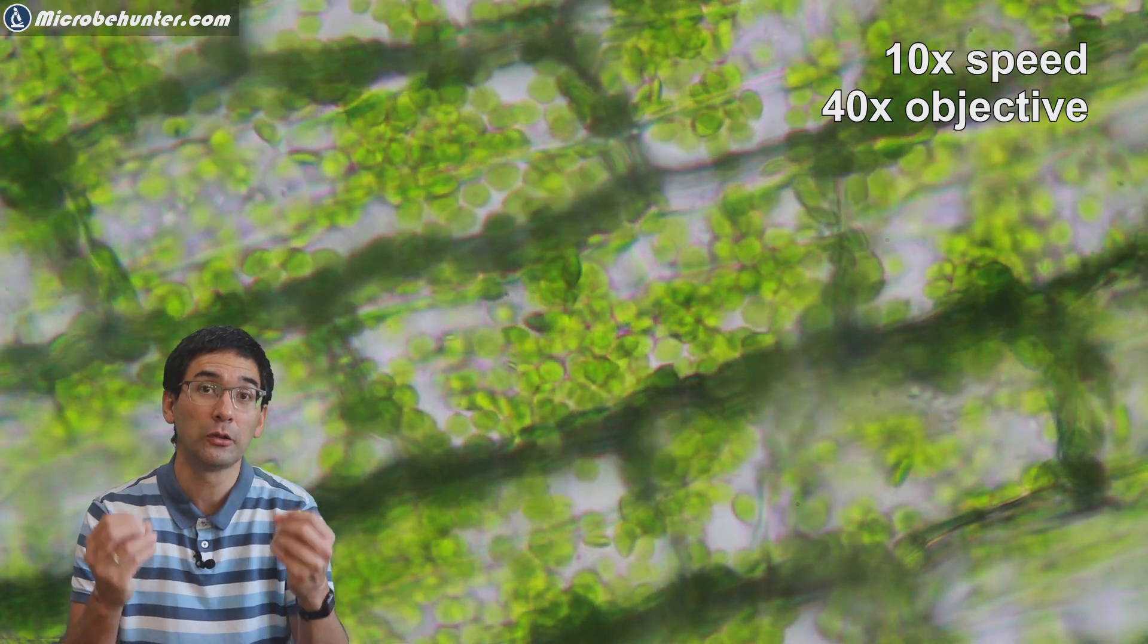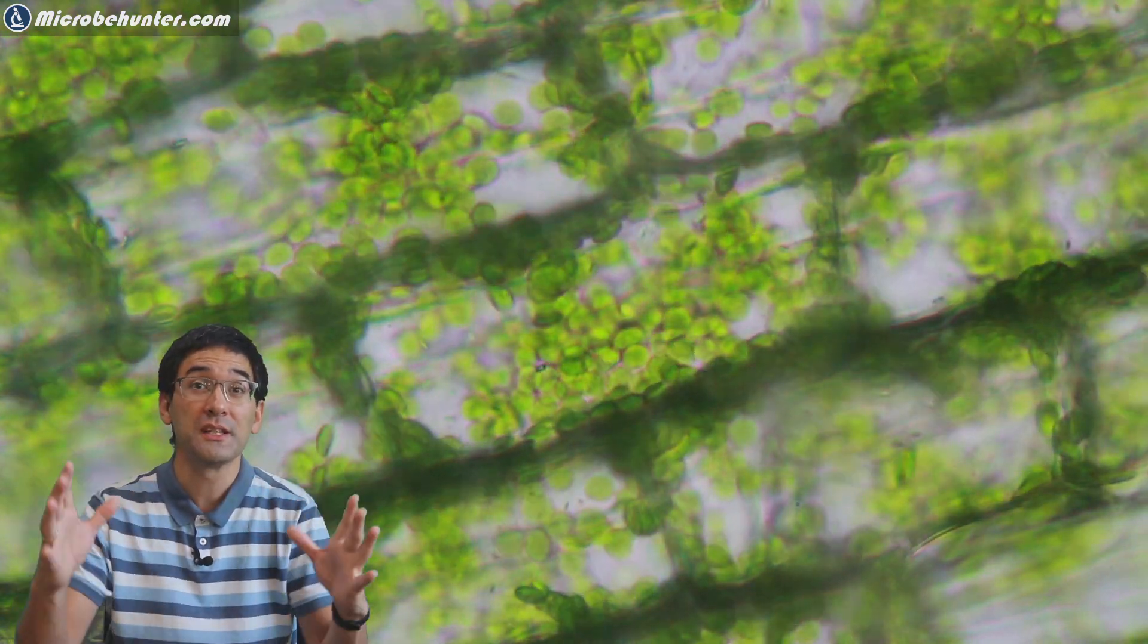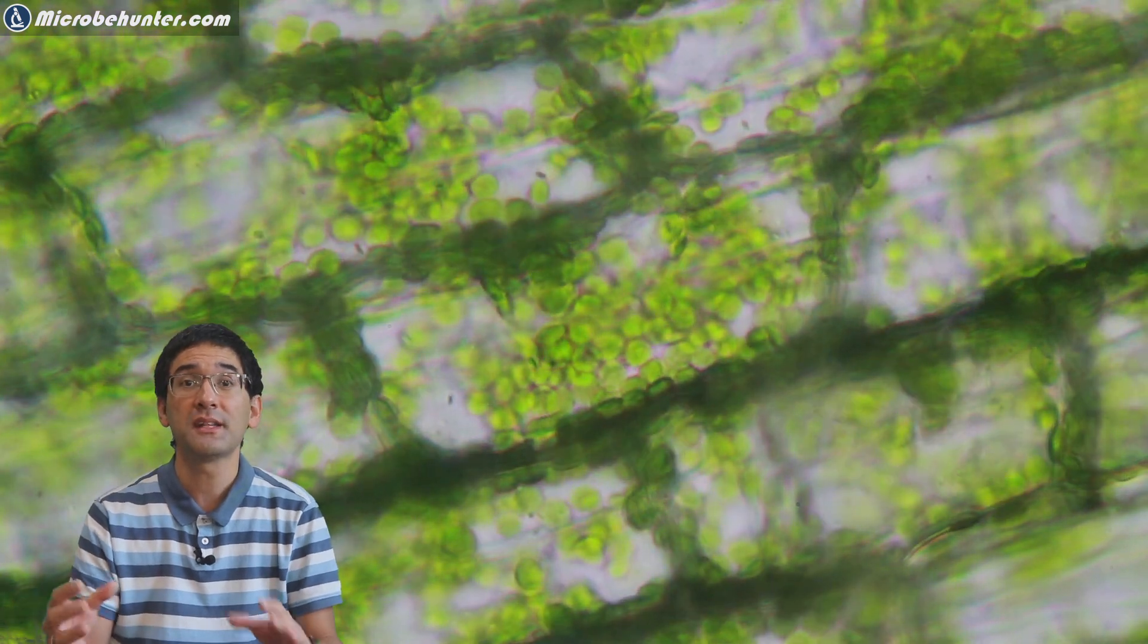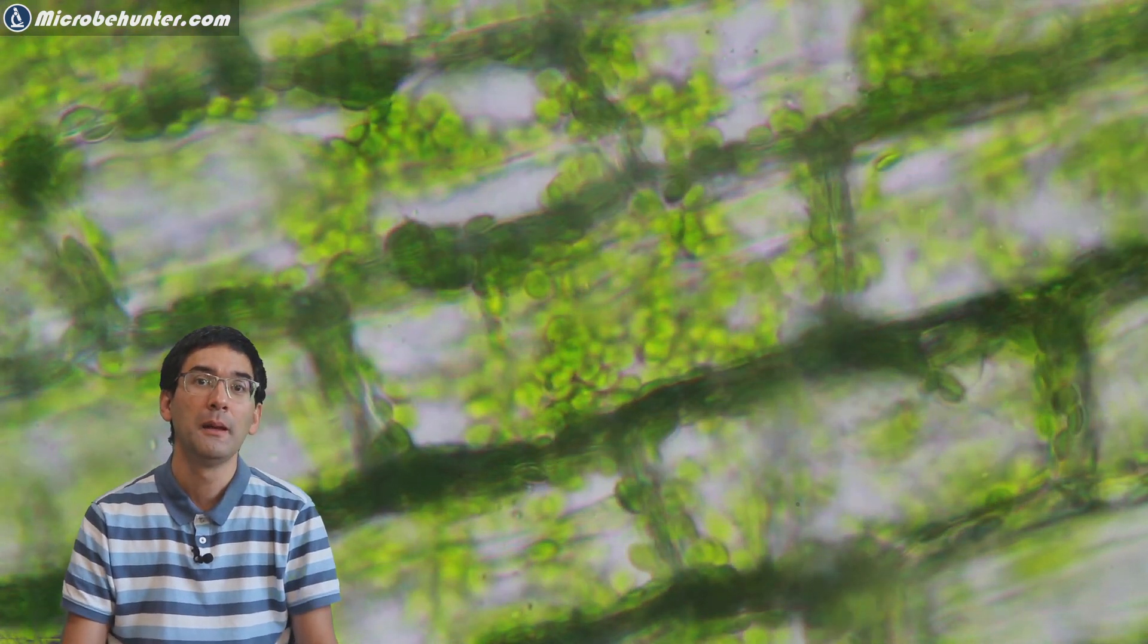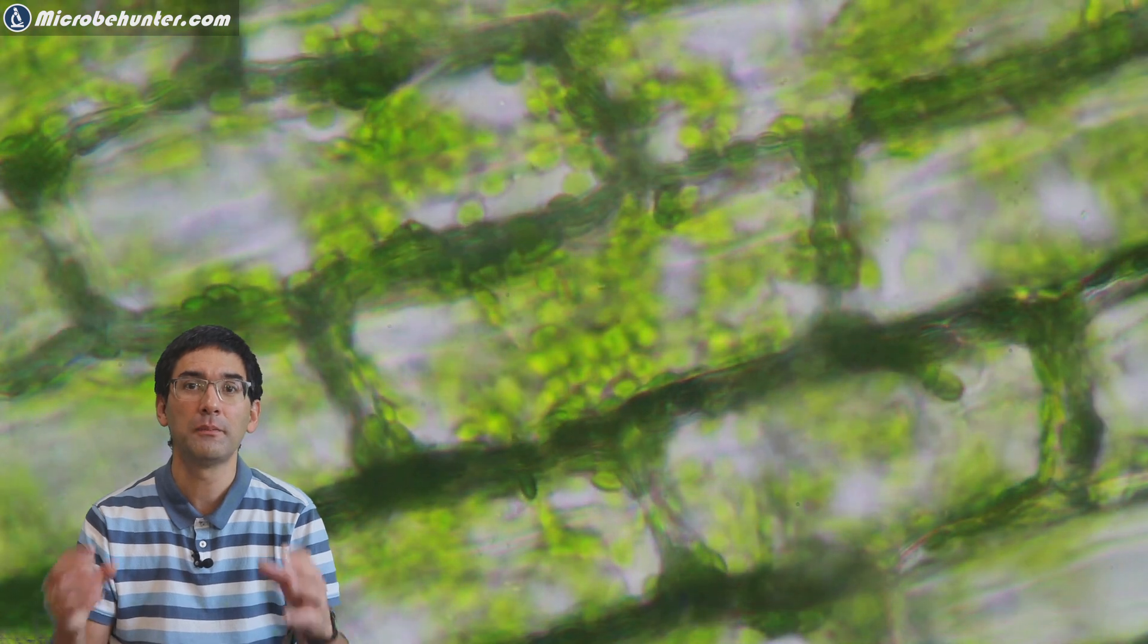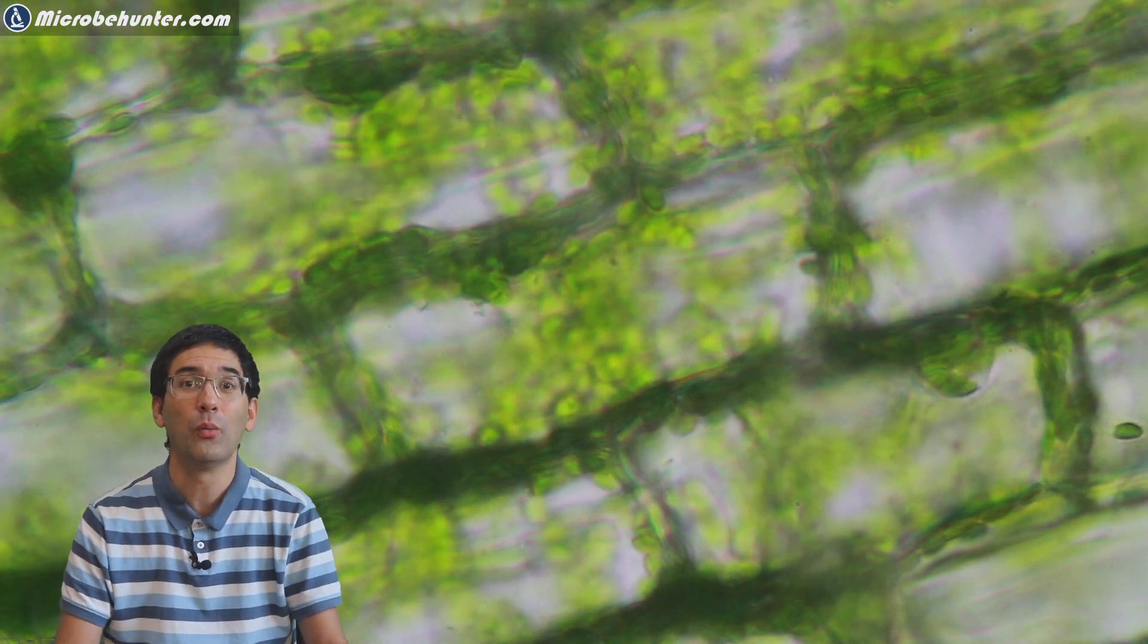When you look into the cells, then you can also see that the chloroplasts are the only structures that are actually really pigmented. You can also see the cell wall, of course, but other cell organelles like the nucleus and mitochondria, they are quite transparent and therefore difficult to see. But the chloroplasts themselves, they move around in the cell. And the question is now, why do they do that? And what makes them move?